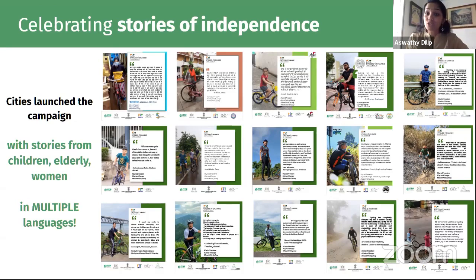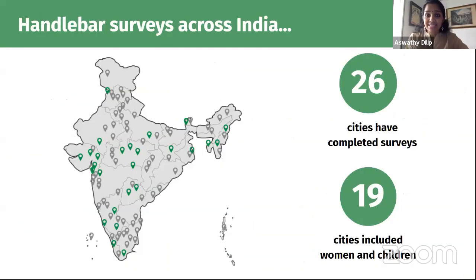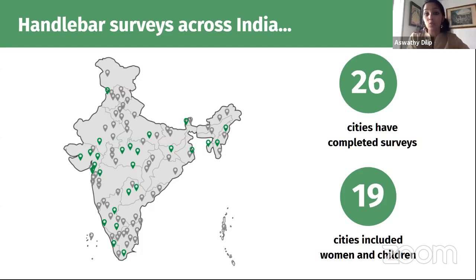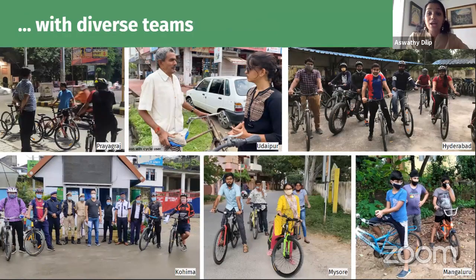Further, cities have also started taking action on the ground. 38 cities, including the panelists here as well as Agartala, Hyderabad, and Nashik, have had large groups of cyclists initiating handlebar surveys. It's fantastic to note that 27 of them included women and children to ensure their pain points are included in the survey. Some cities like Udaipur got more information by talking to commuters during surveys, some spoke to cycle repair shop owners, and some cities used videos to collate all of this information.